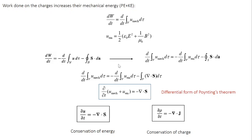Since there are volume integrals on either side, we can disregard the integrals and focus on the terms inside. The time derivative of mechanical energy density is on the left, and the time derivative of electromagnetic energy density is on the right. Combining them gives: partial by partial T of (U_mech plus U_em) equals minus divergence of S. Defining total energy density U as U_mech plus U_em, this simplifies to partial U by partial T equals minus divergence of S. This is the differential form of the Poynting theorem.